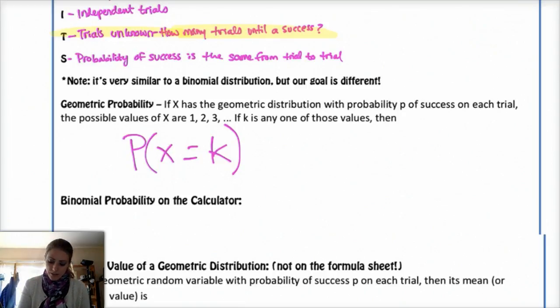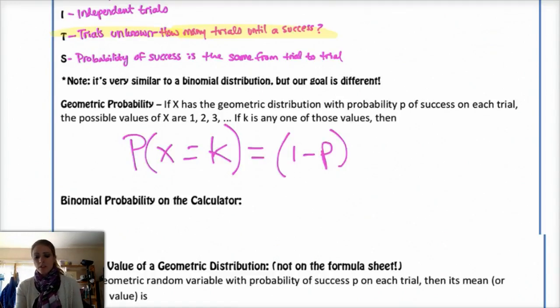So that looks like your failure is 1 minus p. The probability of success is p. So probability of failure is 1 minus p. And then you want k minus 1 fails. And then you want one success, so times p. So that is your geometric probability.